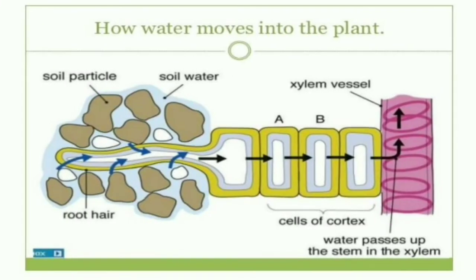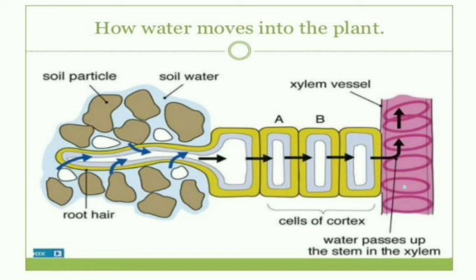How water moves into the plant: water enters into the root hair and then is transported to the epidermal cell, then transported to the cells of the cortex. Finally, it reaches the xylem. From the xylem, it is transported to the various parts of the plant.